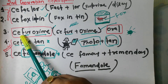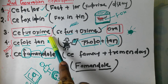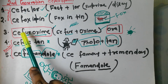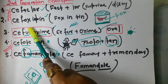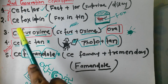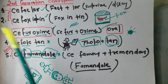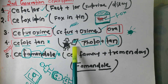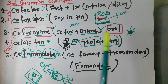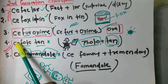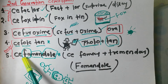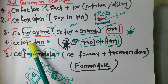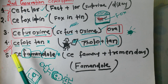The next second generation drug is Cefuroxime: fur is washed with 'oxyme' — oxyme is a detergent name — so 'Cefuroxime' because fur is washed with oxyme. Another second generation drug is Cefotetan: if you take lots of selfies in the sun, the photo becomes tan — 'Cefotetan' — photo tan. You can remember it this way.